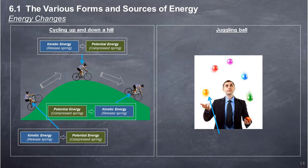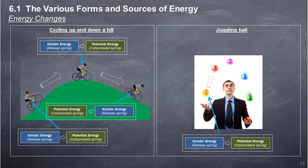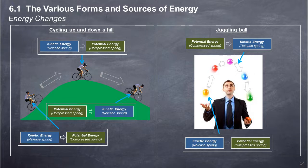Juggling a ball: When the ball leaves the hand, kinetic energy is at maximum. As the ball rises, it slows down and loses kinetic energy, which changes to potential energy. At the highest point of the juggle, the ball stops momentarily — potential energy is at maximum and kinetic energy becomes zero. When the ball starts to fall down, it picks up speed and potential energy changes back to kinetic energy. When the ball falls back to the hand and stops, all kinetic energy changes to potential energy.